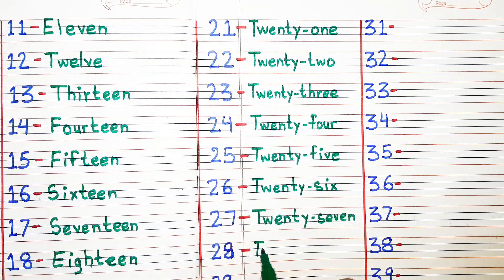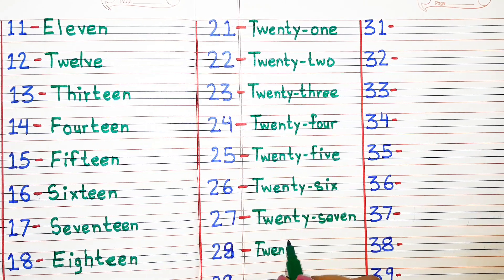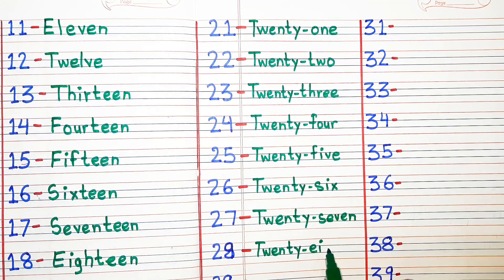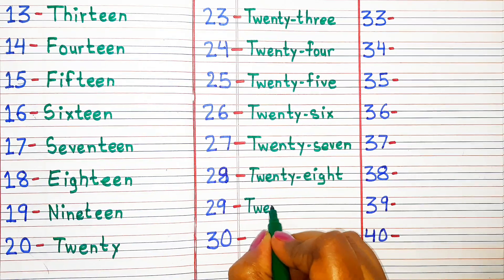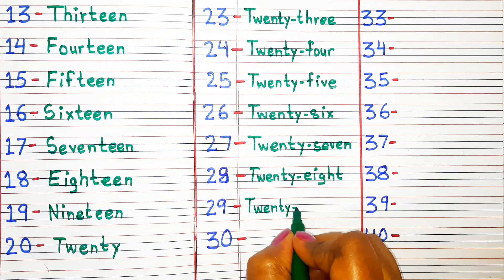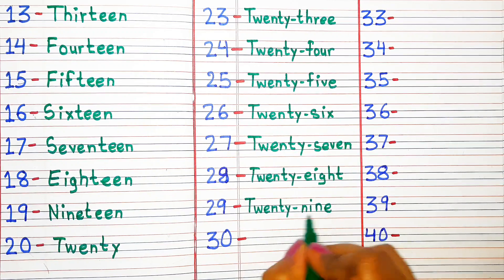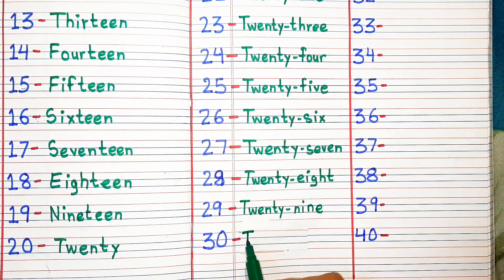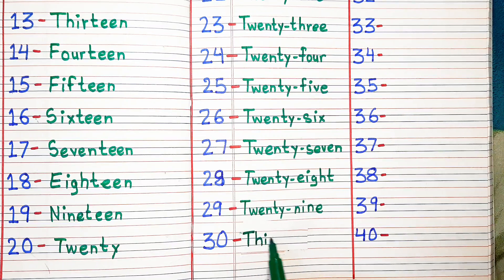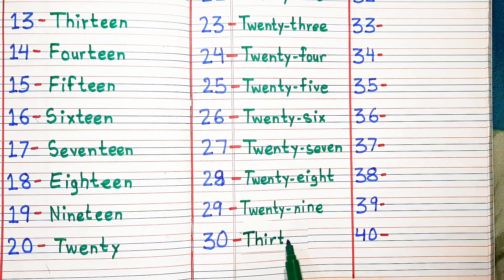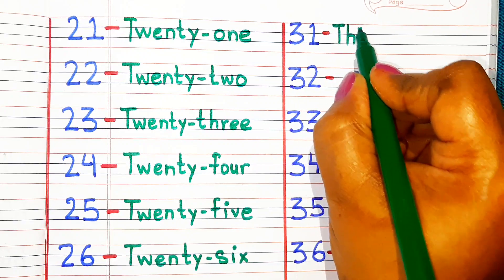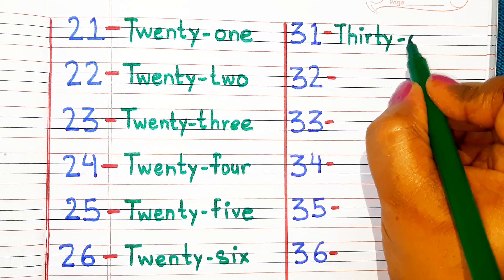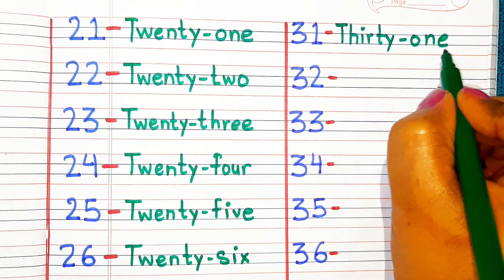T-W-E-N-T-Y-E-I-G-H-T 28. T-W-E-N-T-Y-N-I-N-E 29. T-H-I-R-T-Y-O-N-E 31.